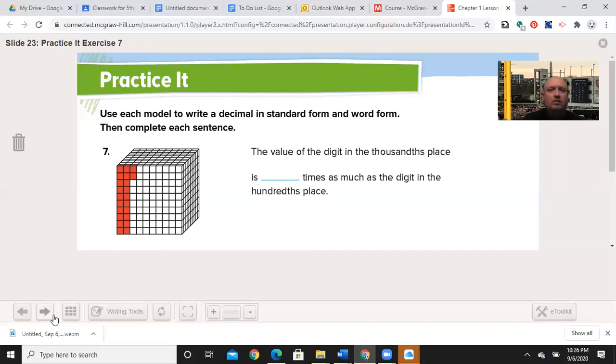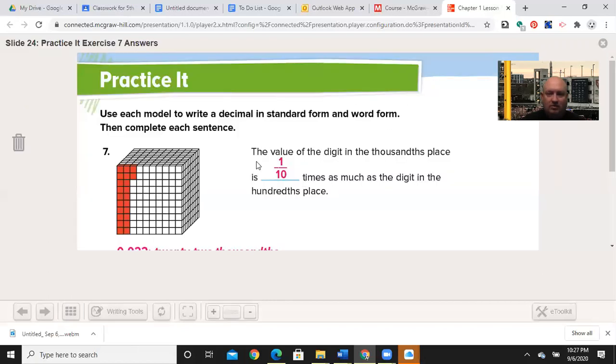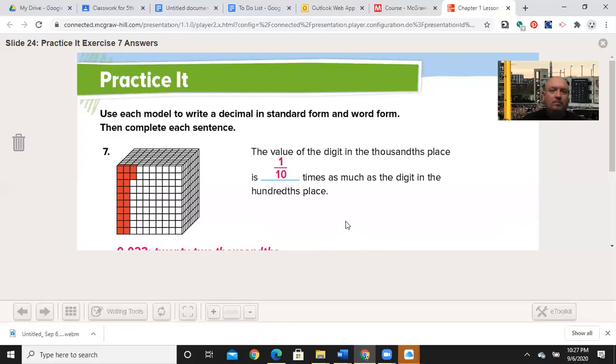Let's go to number seven. Go ahead and fill this one out. Pause your video and come back when you're ready. Welcome back. The value of the digit in the thousandths place is blank times as much as in the hundredths. Well, we know that this pattern continues on and so it's one tenth, one tenth as much as the digit in the hundredths. And if we went to the ten thousandths, that'd be one tenth of the value of the thousandths place. So in here, 0.022, there are no whole ones colored in. There are no whole slices. There are two columns and two blocks, 0.022.